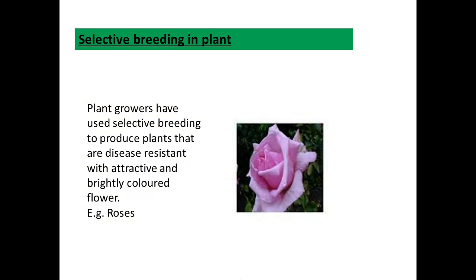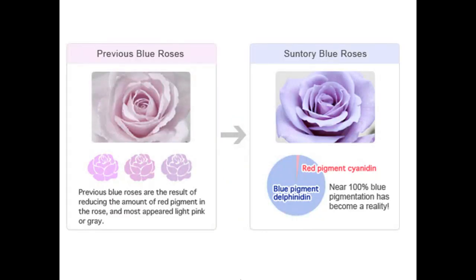Selective breeding is not used only with animals but also with plants. Plant growers have used selective breeding to produce plants that are disease resistant or have attractive and bright colored flowers — for example, roses. An example of selective breeding in plants is blue roses. The previous blue roses were the result of reducing the amount of red pigment in the rose, and most appeared light pink. The blue selectively bred roses now have nearly 100% blue pigmentation.